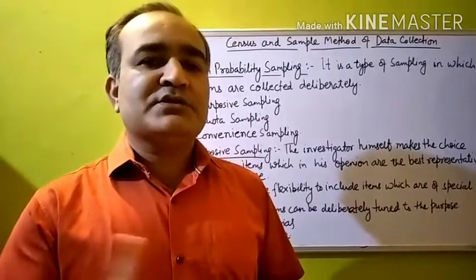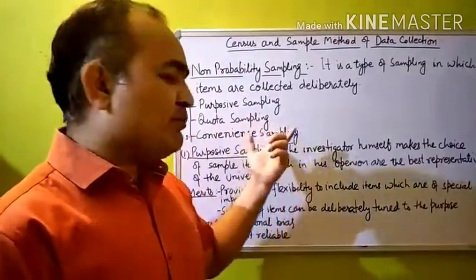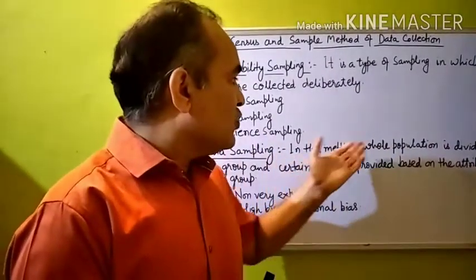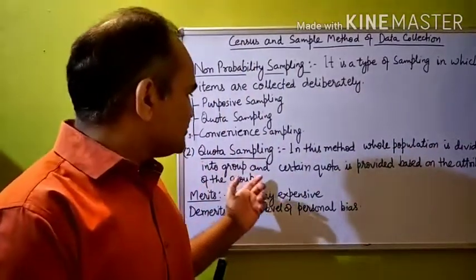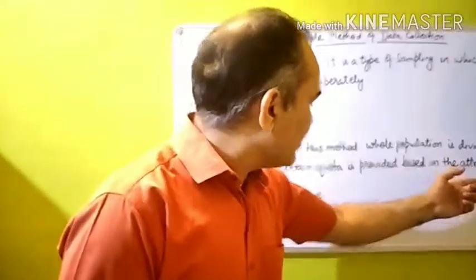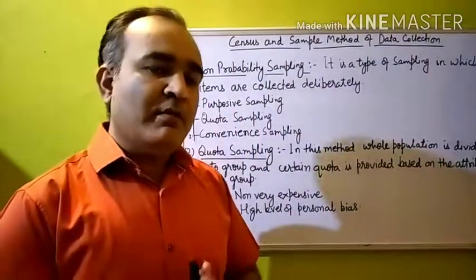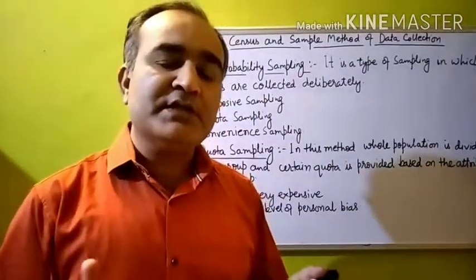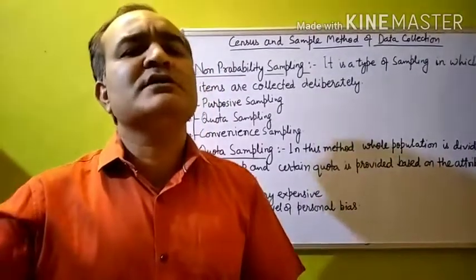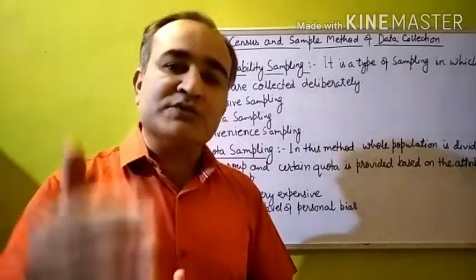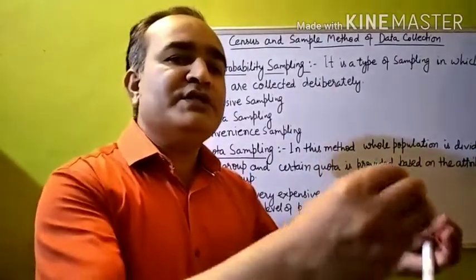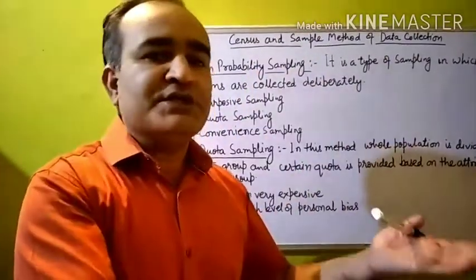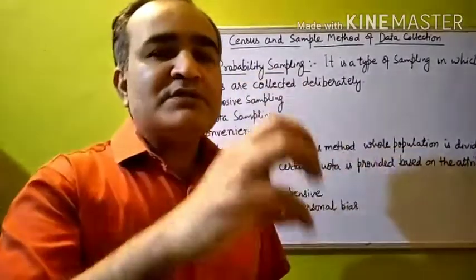The next sampling methodology is quota sampling. Quota sampling is a sampling method in which the whole population is divided into groups and a certain quota is provided based on the attributes of each group. The whole universe or population is divided into certain groups based on certain characteristics, and on the basis of those characteristics a certain quota is given to each and every group.